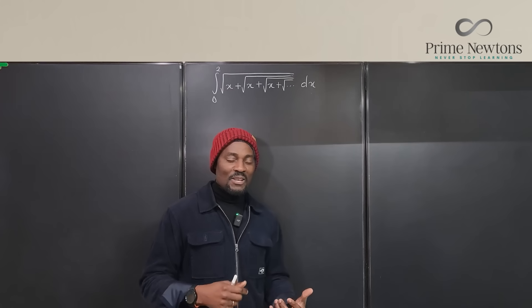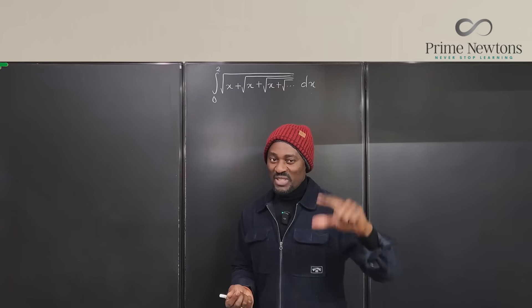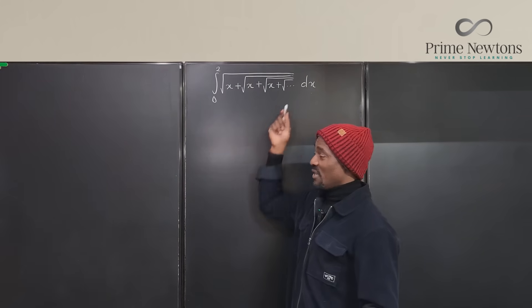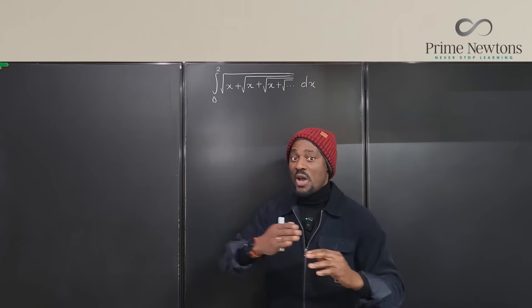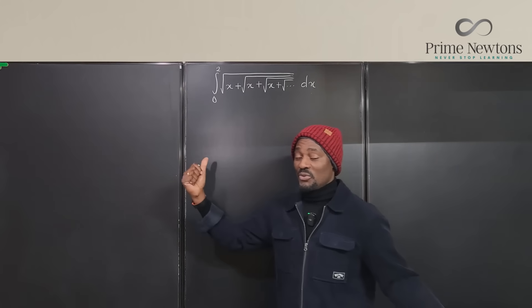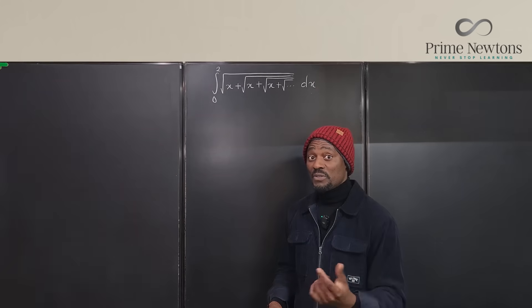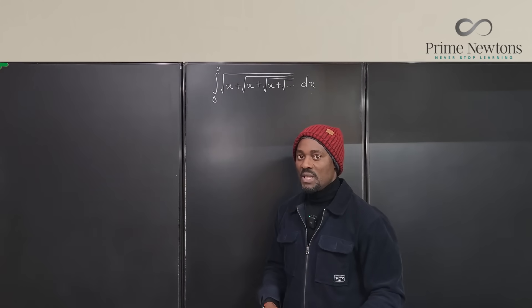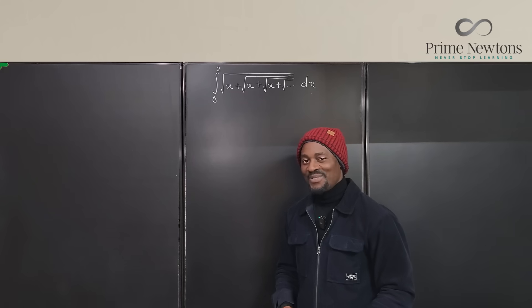This is something that is easy once you can find the representative function, because there must be something you can write in shorthand whenever you have something that goes to infinity when it comes to nested radicals. So we'll first find what function this represents, and then it will be easy for us to integrate.